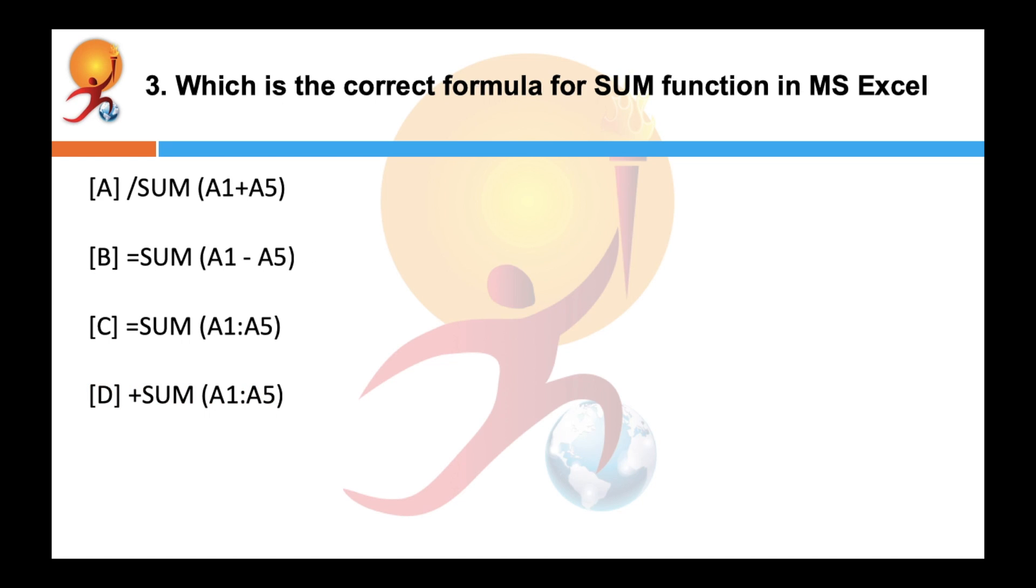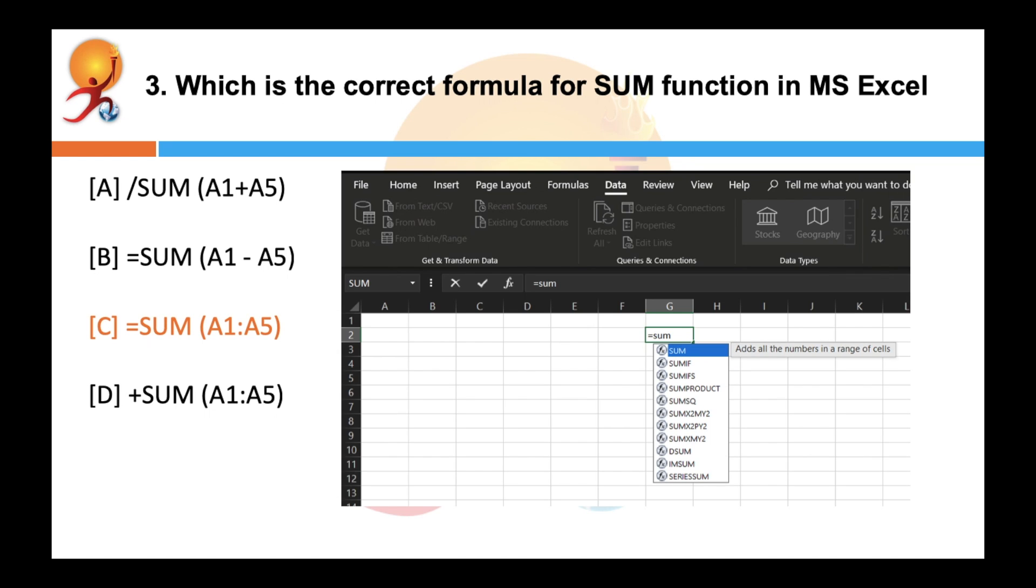Which is the correct formula for SUM function in MS Excel? Correct answer is C. The SUM function in MS Excel adds the arguments you enter in the SUM formula. The correct example of SUM formula is equals SUM A1 double dot A5.